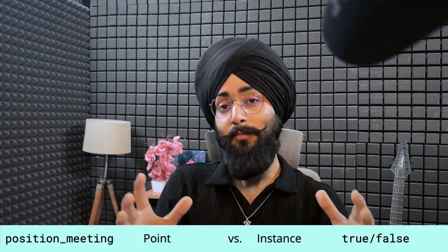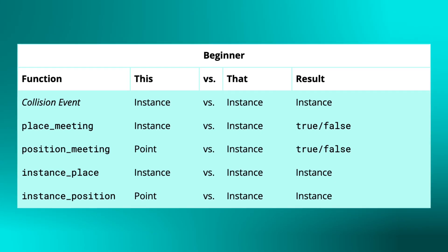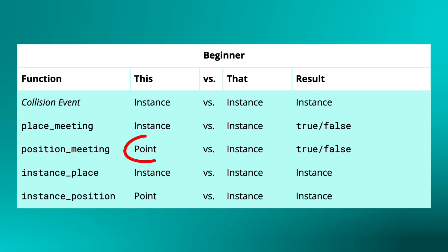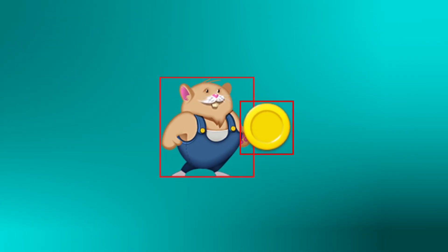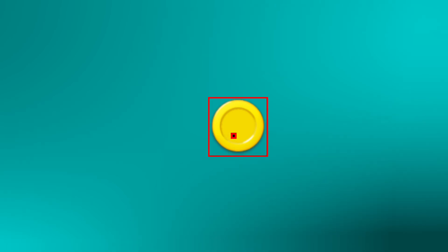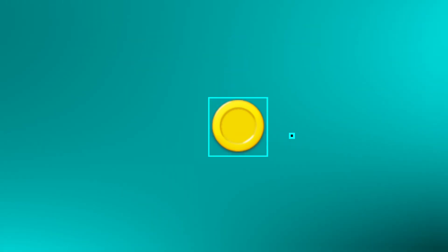position_meeting is the same as place_meeting with one major difference. place_meeting checks if the mask of the current instance is colliding with the mask of another instance, but position_meeting simply checks if one pixel or point in the room is touching the mask of another instance. Using place_meeting to check for a coin will look like two masks overlapping, but using position_meeting will instead check if a point is overlapping with the mask of a coin. This is useful if you want to check for a collision at the mouse's location, or check if there's something below the player's feet without using the whole mask.